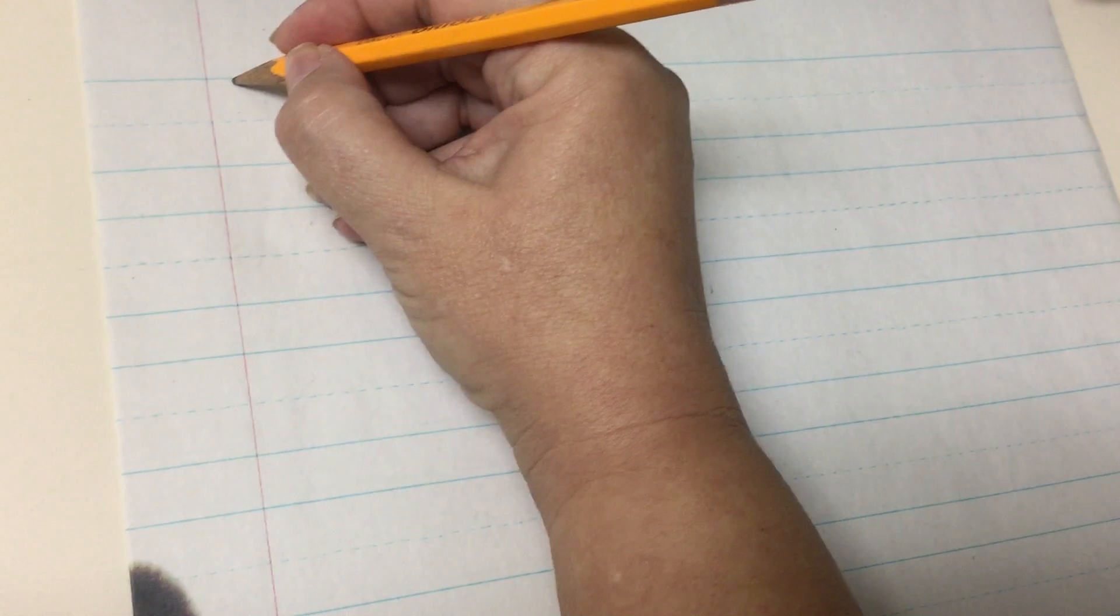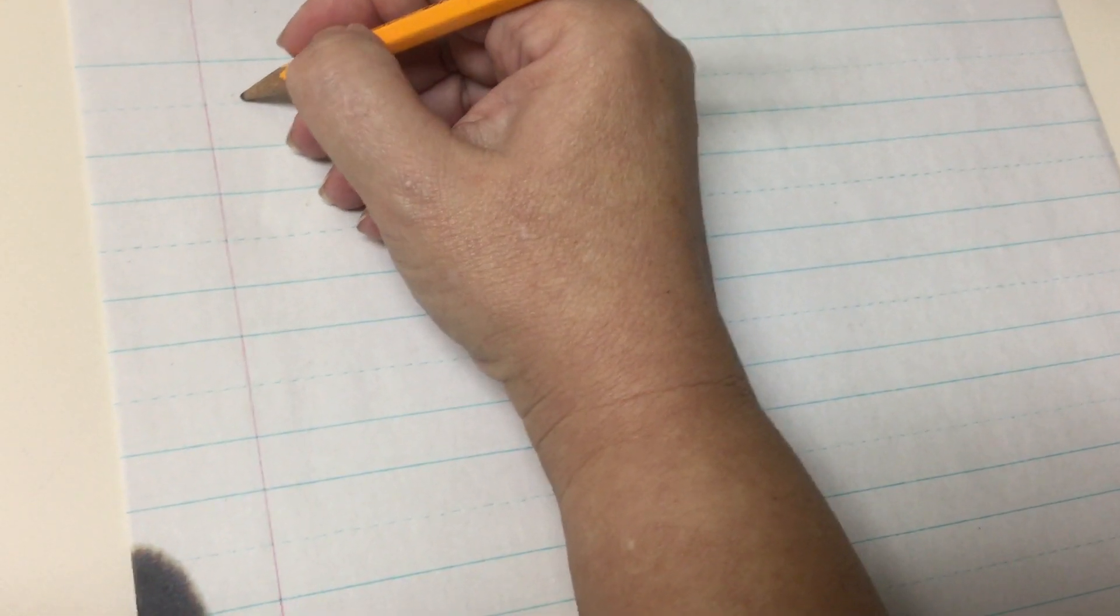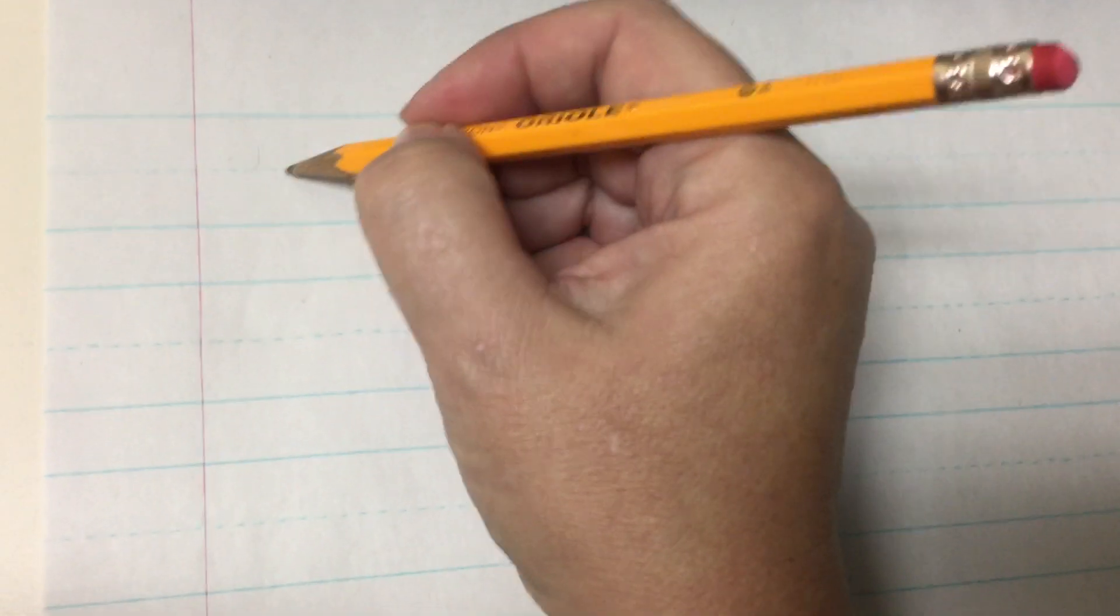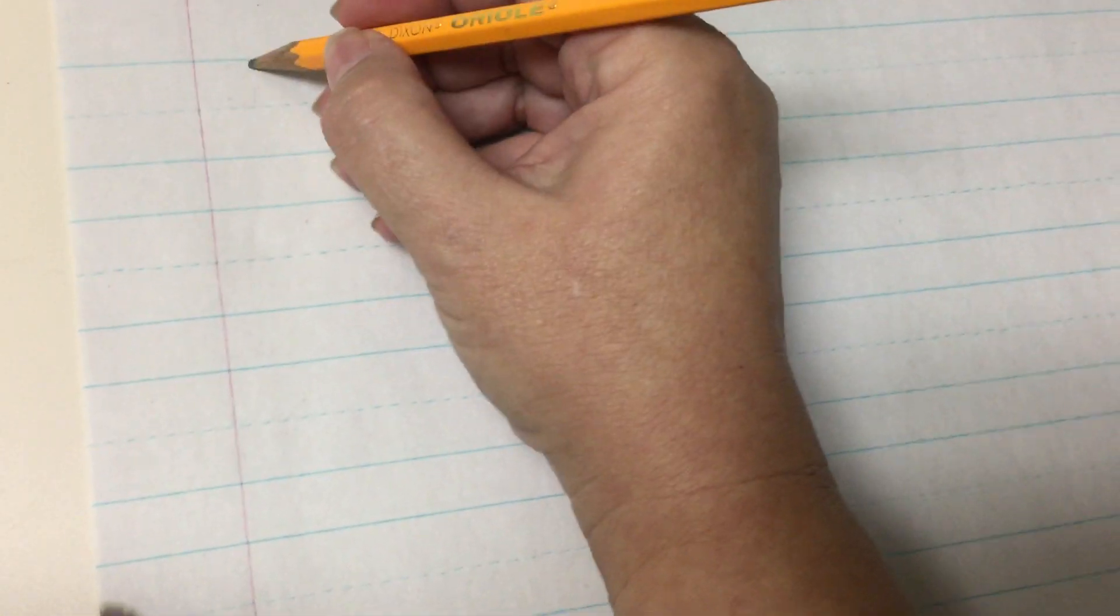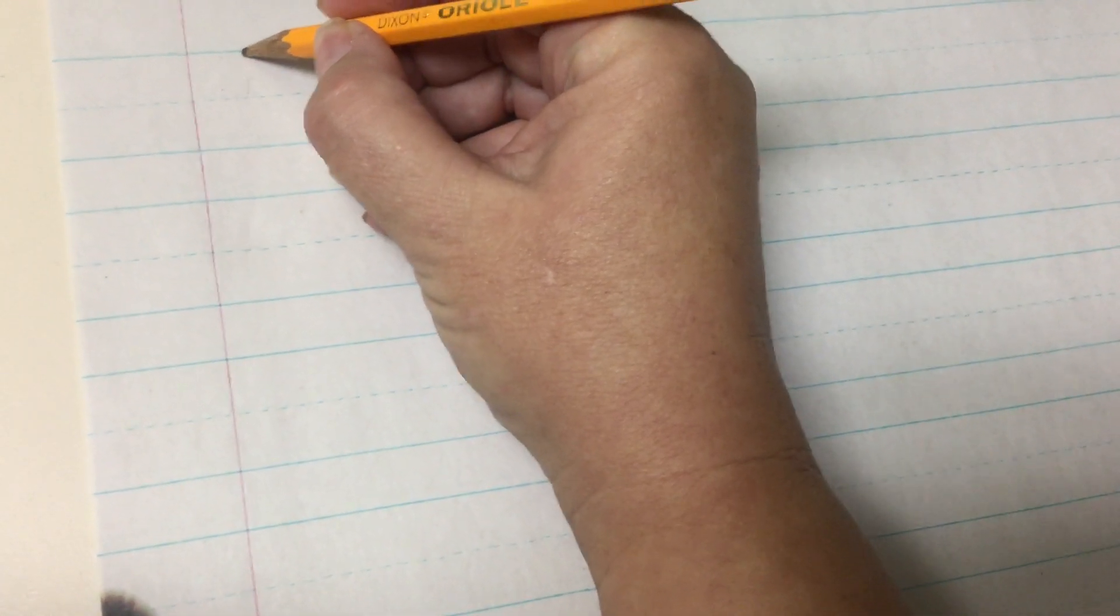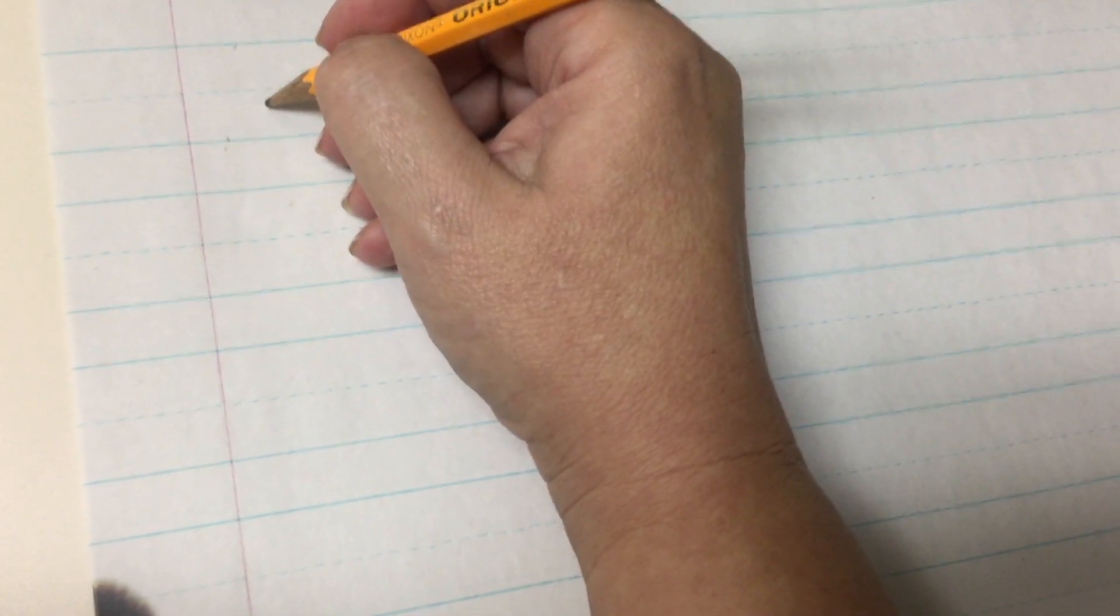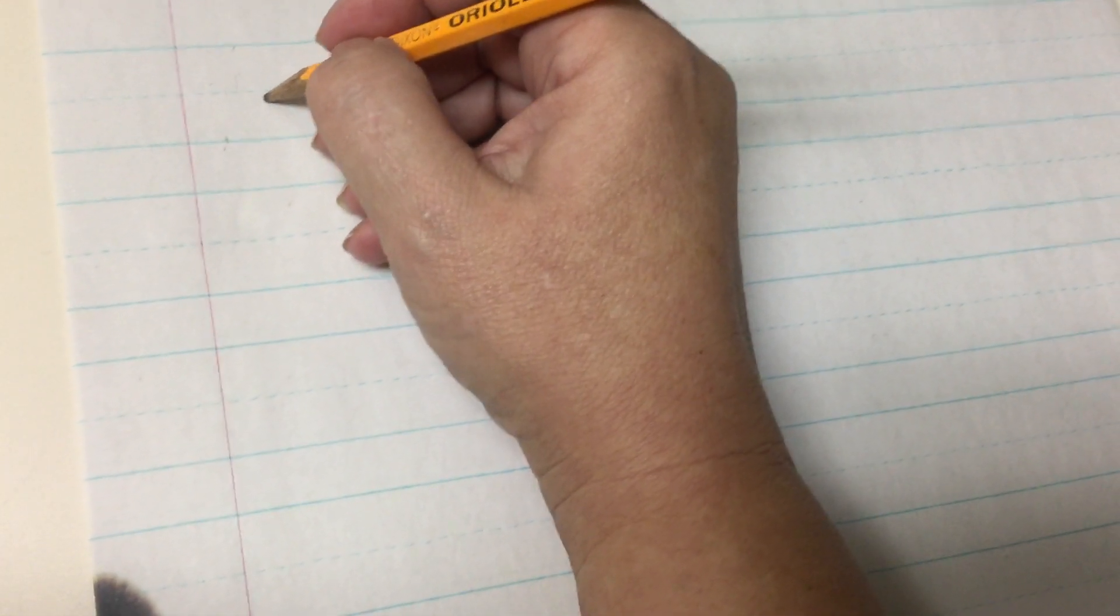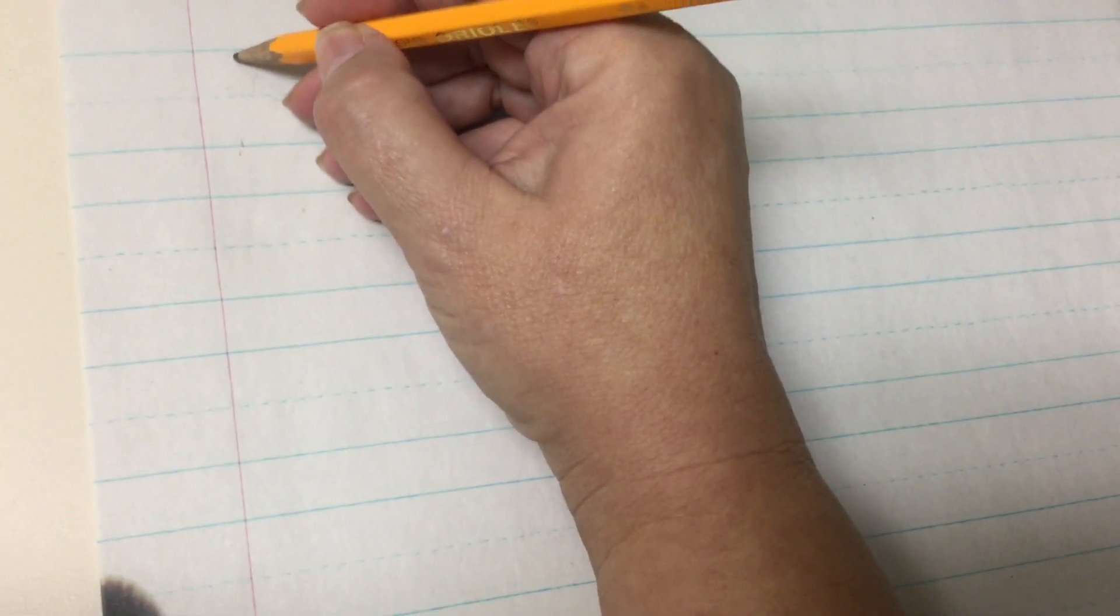We start at the top line. A lot of kids haven't seen this paper or haven't used it and they want to write in between these. There's a dotted line in between. You probably used this paper in school as well. So we need to encourage them to write from solid blue line to solid blue line. You guys use your name tags that you have at home.